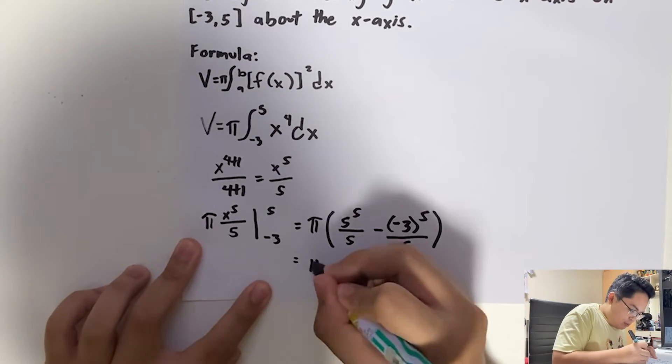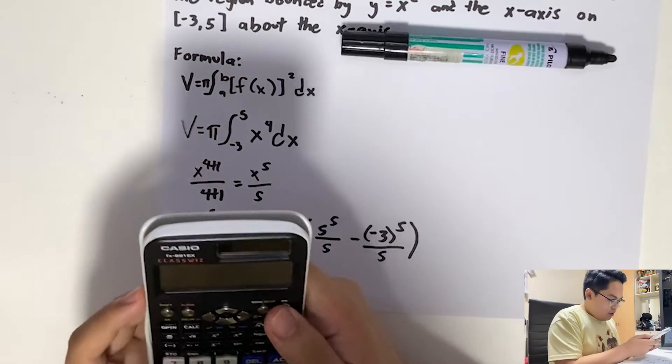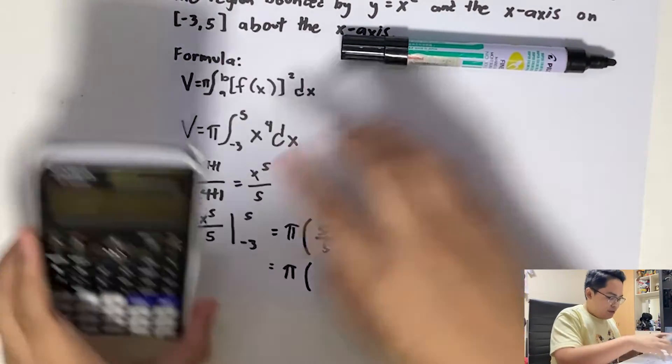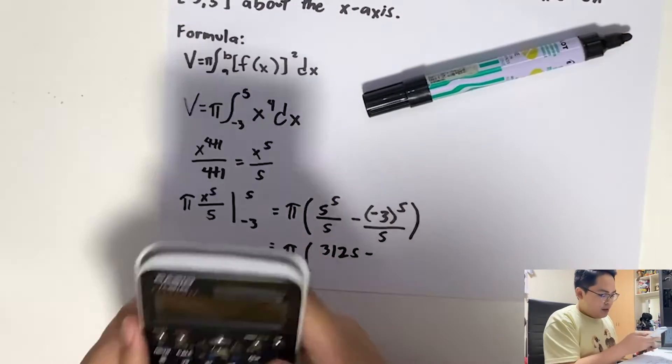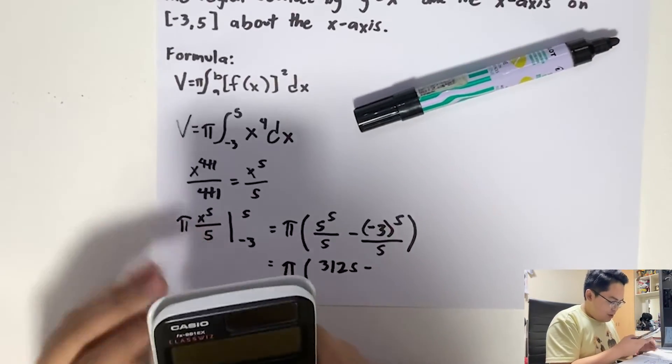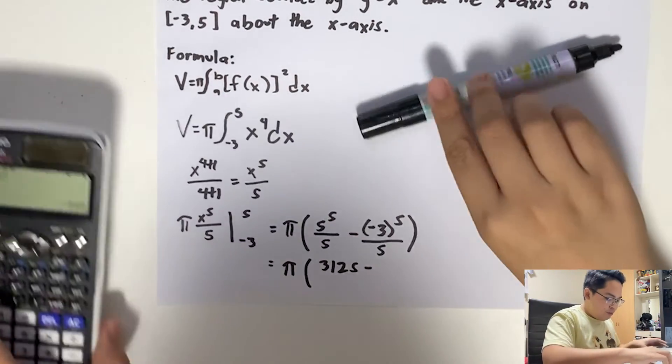So that will be equal to—let's go ahead and use our calculator. So 5⁵ is 3125, and (-3)⁵ is -243.